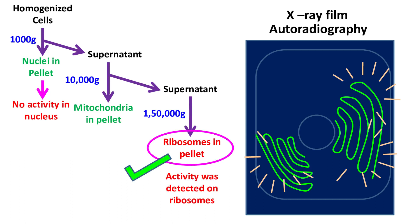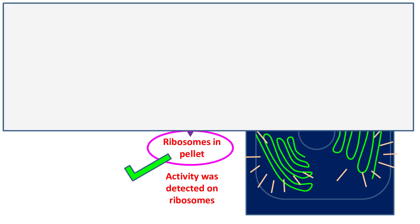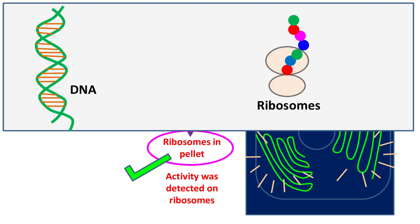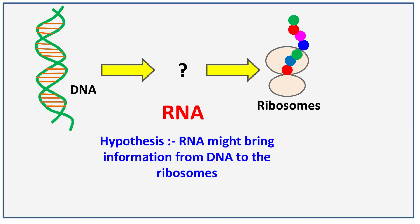This means there must be something that brings information from the DNA to the ribosome. So they had the hypothesis that there might be an RNA that brings the information from the DNA to the ribosome for protein synthesis.